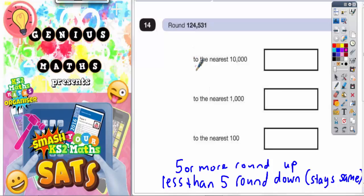So the easiest thing to do here is to actually write the original number out next to each part of the question. So I'm just going to do that first. Let's see why I'm doing that in a minute.